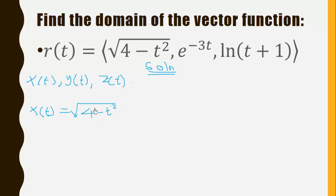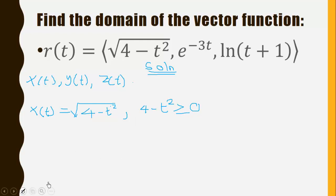For x(t), it is a radical function. For all radical functions of this form, they are continuous where the radicand is greater than or equal to zero. The radicand is whatever is under the radical sign. We solve 4 minus t squared ≥ 0, which factors as (2 minus t)(2 plus t) ≥ 0.